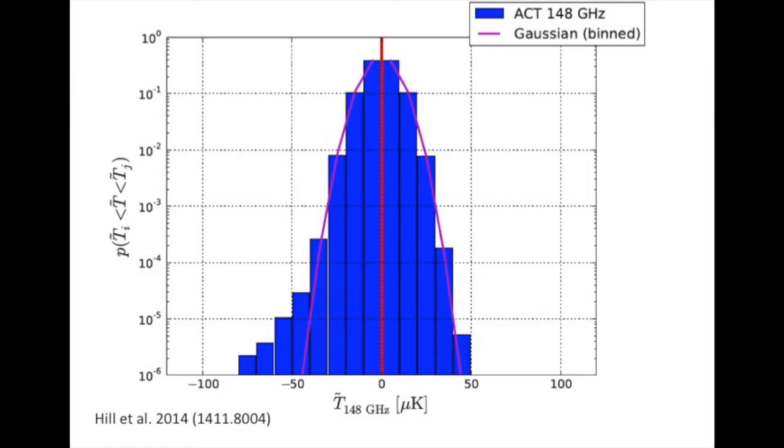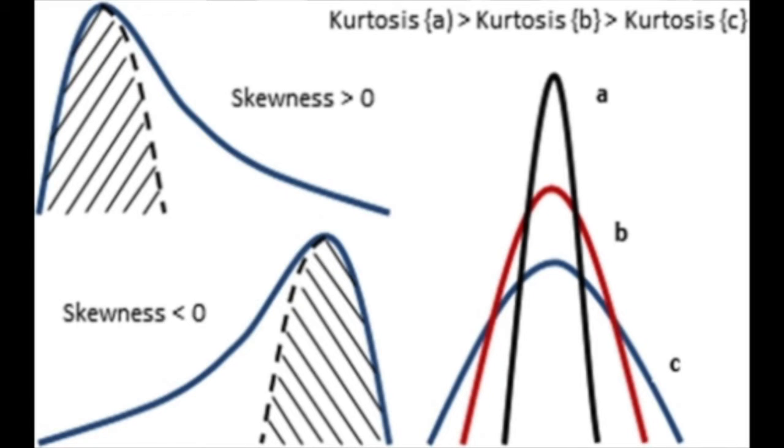We had done this a couple of years ago with ACT, focused just on the skewness of the thermal SZ signal in the ACT map. But in the intervening time, we developed the necessary theory to compute the full probability distribution function — the PDF — which includes information from the skewness, kurtosis, and all of the moments in the distribution.